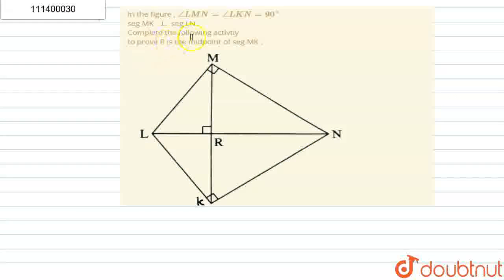In this question, angle LMN equals to angle LKN equals to 90 degree and segment MK is perpendicular to segment LN. Then we have to prove that R is the midpoint of segment MK. First of all, what is given?